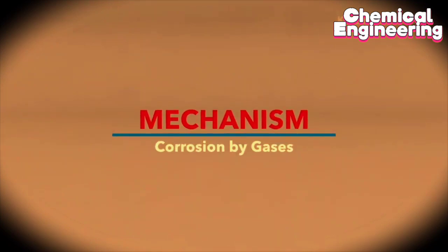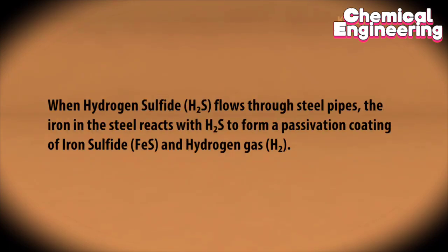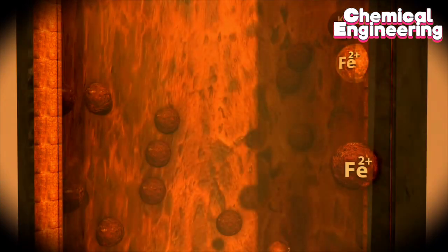Mechanism of corrosion by gases: When hydrogen sulfide flows through steel pipes, the iron in the steel reacts with hydrogen sulfide to form a passivation coating of iron sulfide and hydrogen gas.